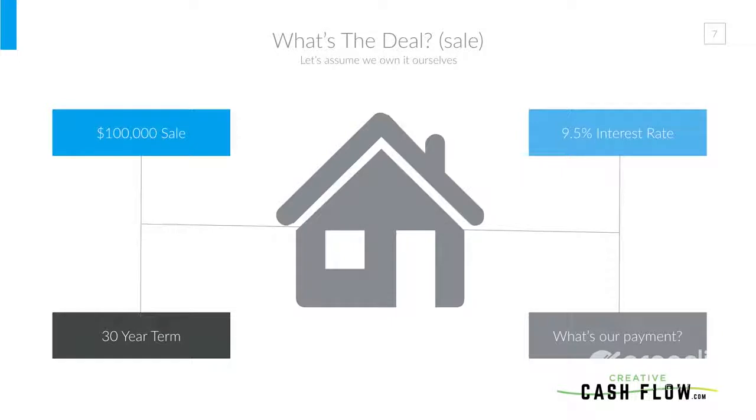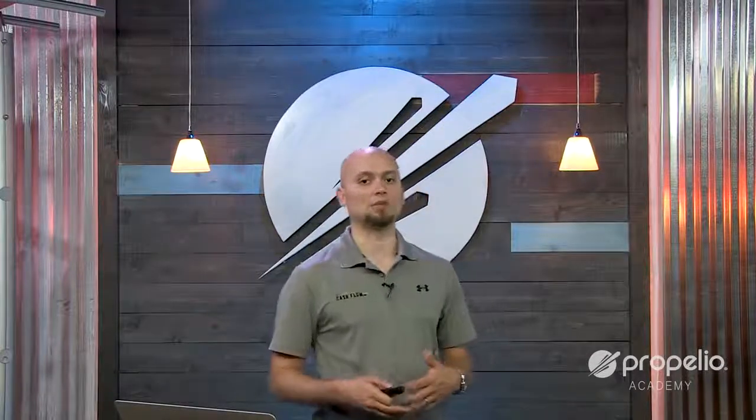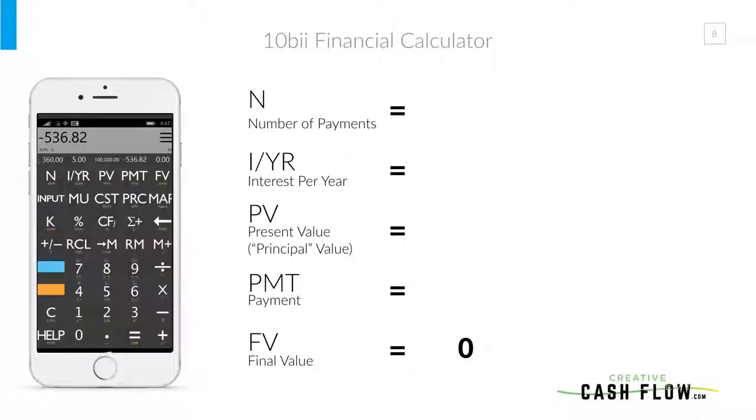Let's look at an example with numbers. We own this house free and clear. We're going to sell it for $100,000 at a 9.5% interest rate on a 30-year term, and now we need to know what the payment's going to be. As you'll hear me mention in other videos, the payment is what dictates everything in this world — much like a lease on a car. We're looking at what the payment would be compared to a rental, and we want our PITI — principal, interest, taxes, insurance, and HOA — to be comparable to what it would cost to rent.